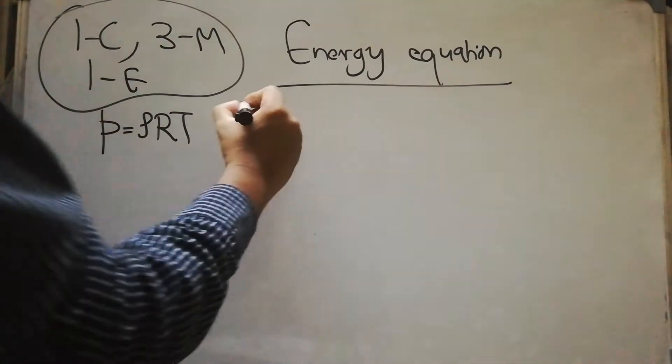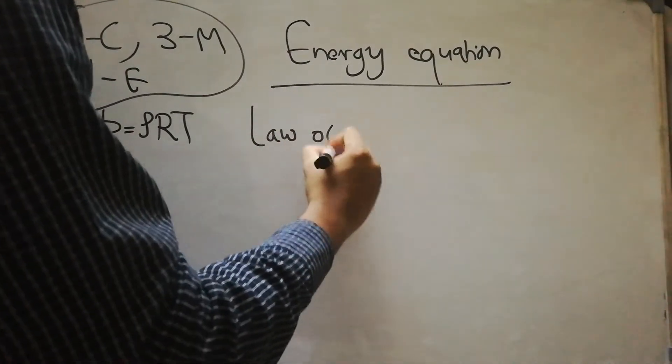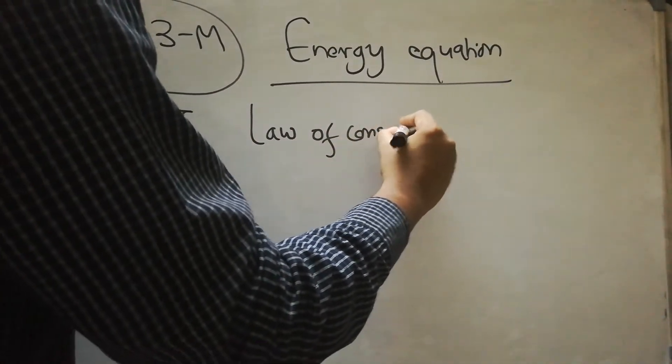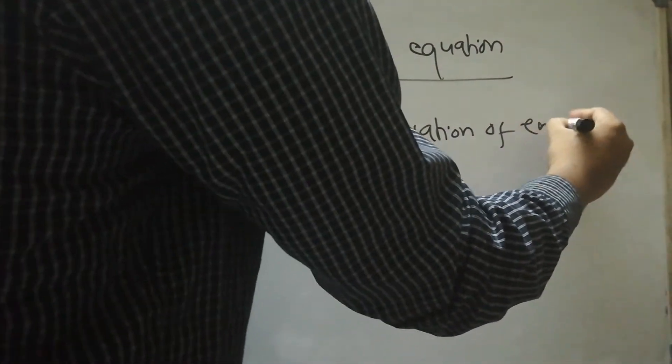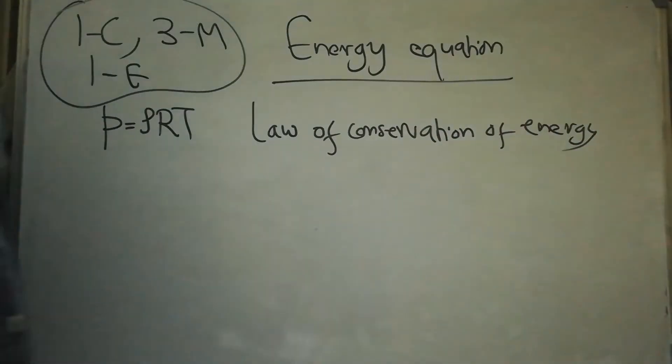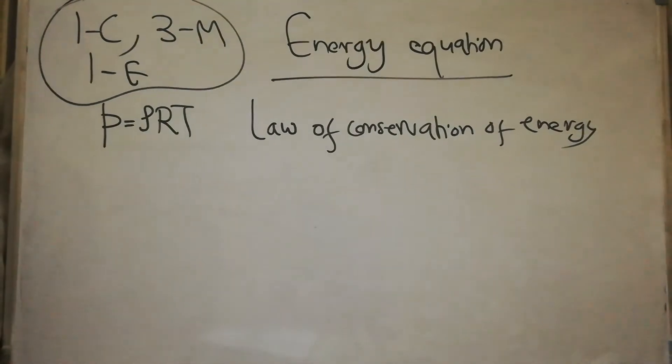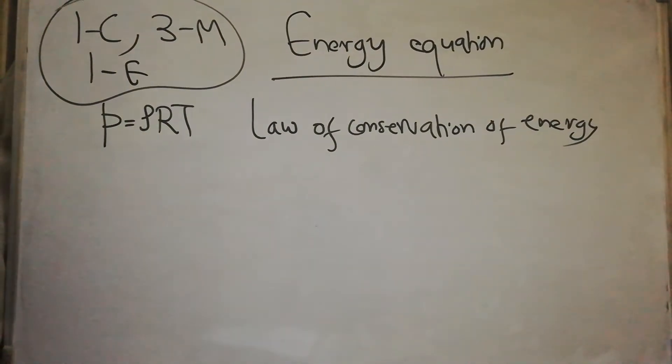To get the energy equation, we need to apply the law of conservation of energy. That is to say that energy can neither be created nor destroyed, but it can be transformed from one state to another.